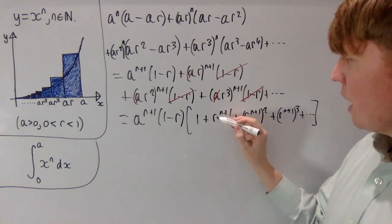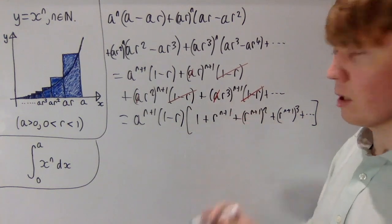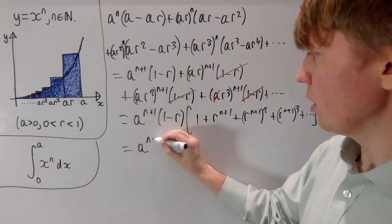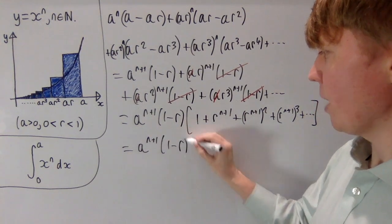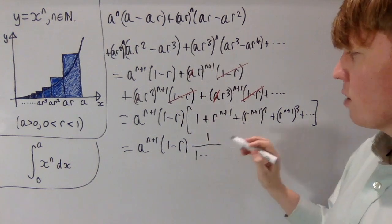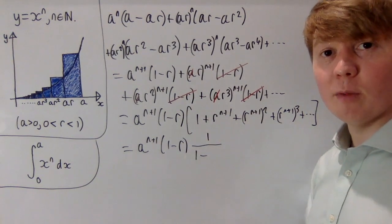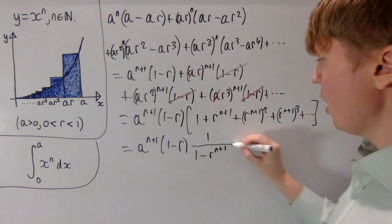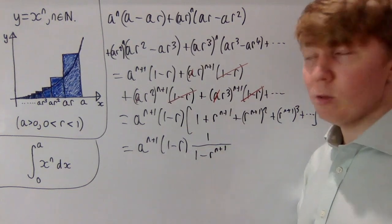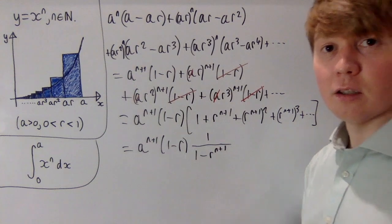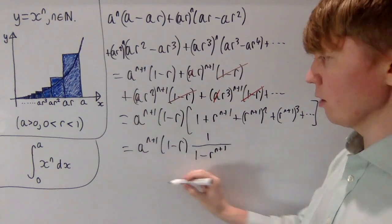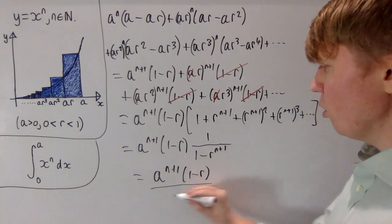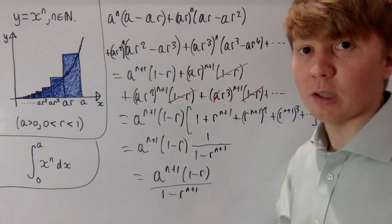Since R is less than one, R to the n plus one is also going to be less than one, so we can use the formula for the sum of a geometric series. The common ratio is R to the power of n plus one, giving one over one minus R to the n plus one. So before taking limits as R goes to one, the area of the sum of all these rectangles is A to the n plus one times one minus R, all over one minus R to the n plus one.